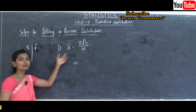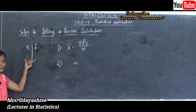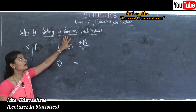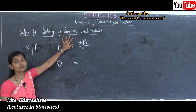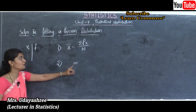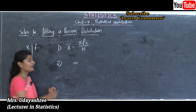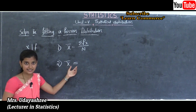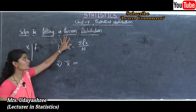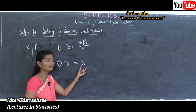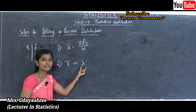Step 2 is to equate the mean of the observed frequency distribution, that is X-bar, with the mean of the Poisson distribution. We know that X-bar equals lambda, where lambda is the theoretical mean of the Poisson distribution.